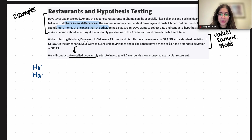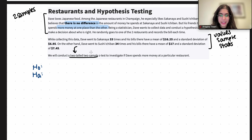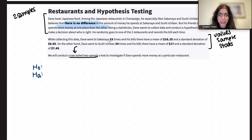It can be Sushi Ichiban, it can be Sakenaya — we don't know. And then it's two-sample because we're dealing with two restaurants. We have two samples collected exactly right here.